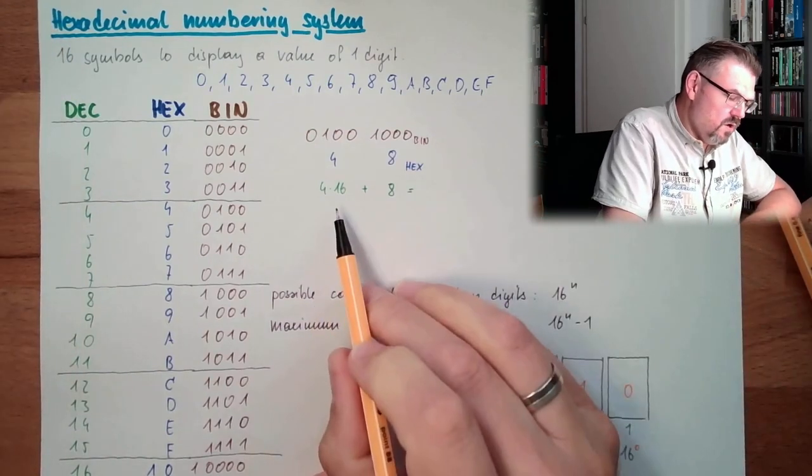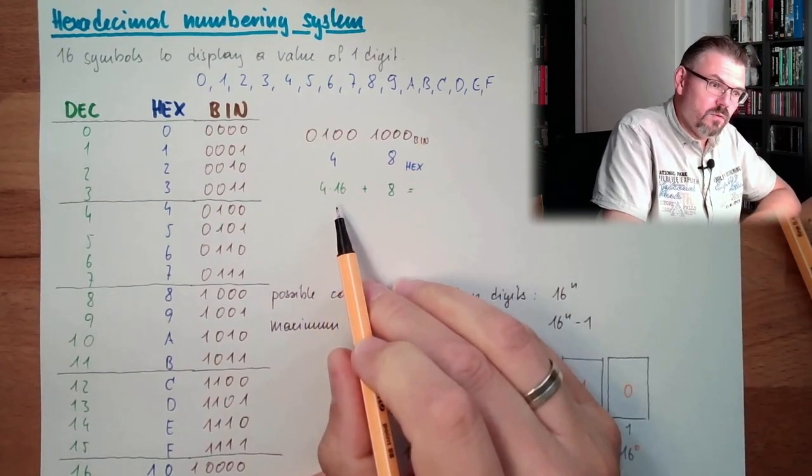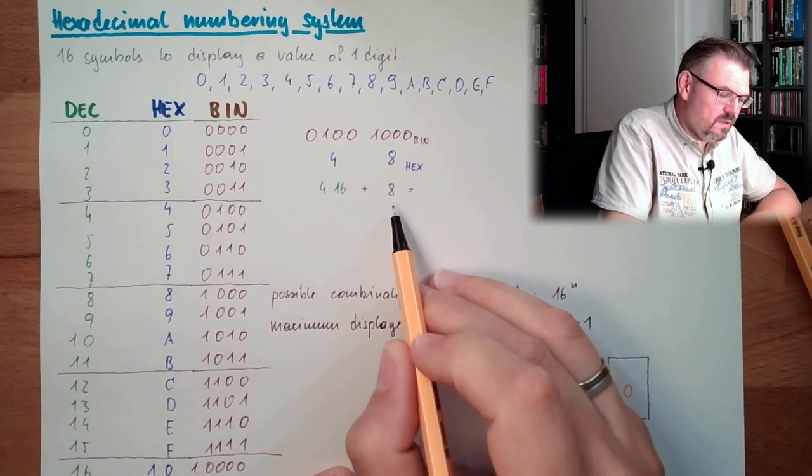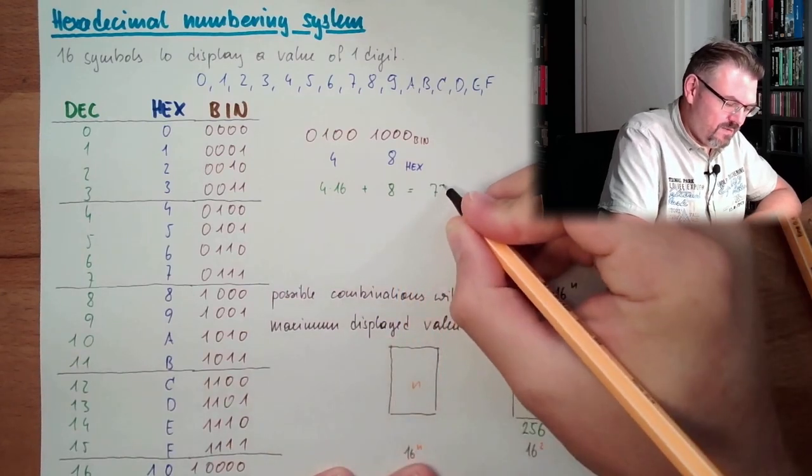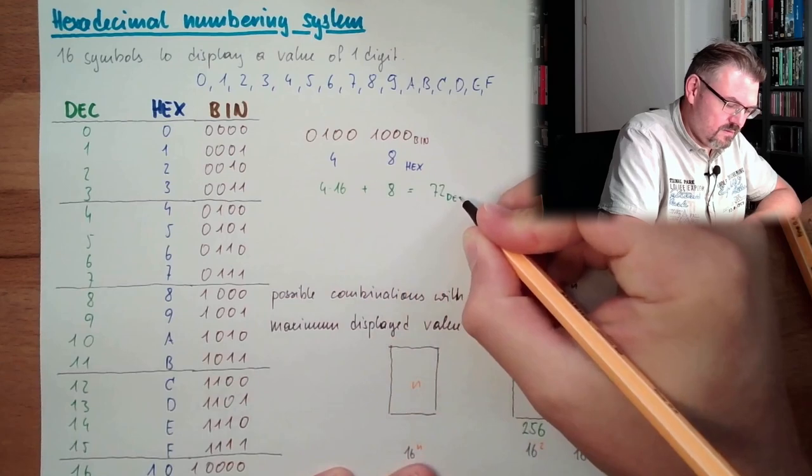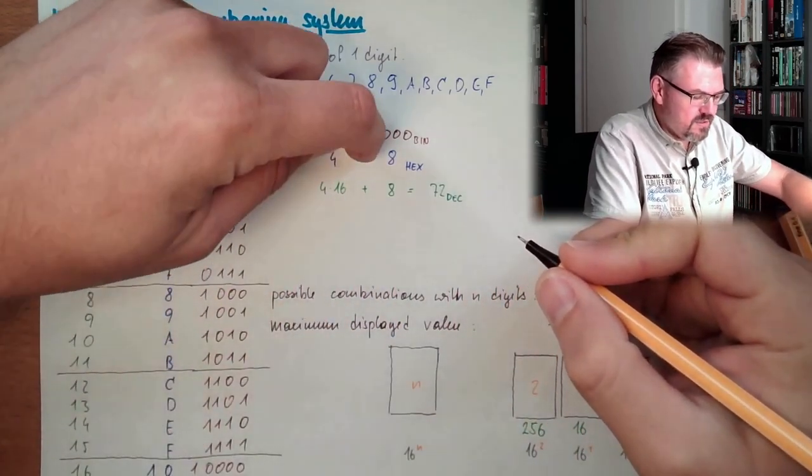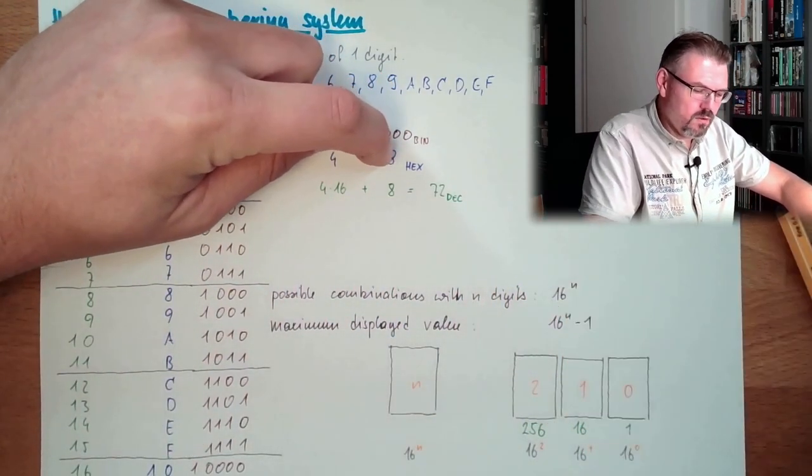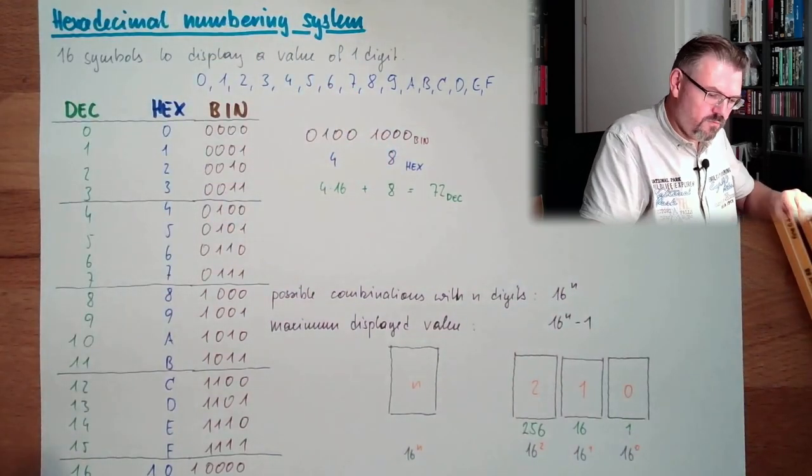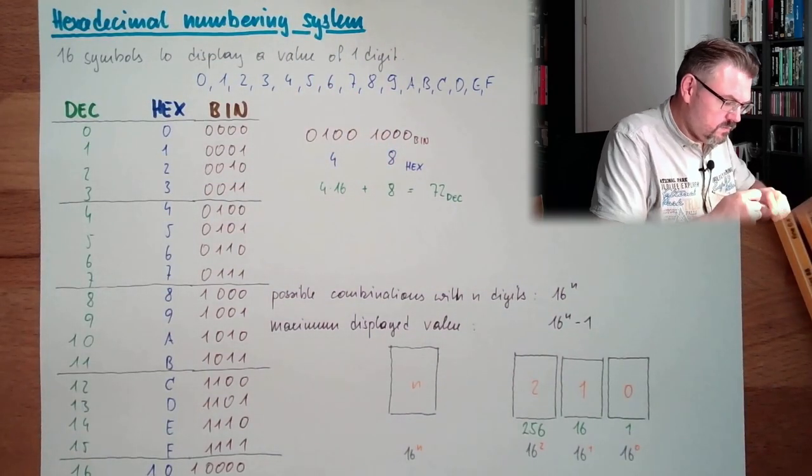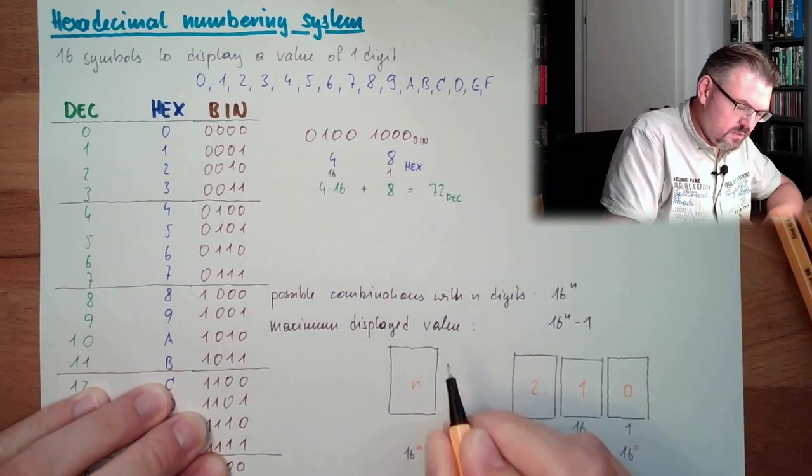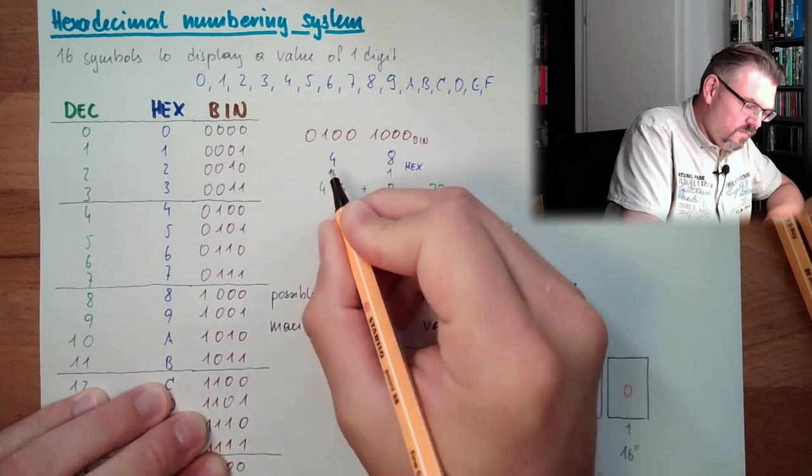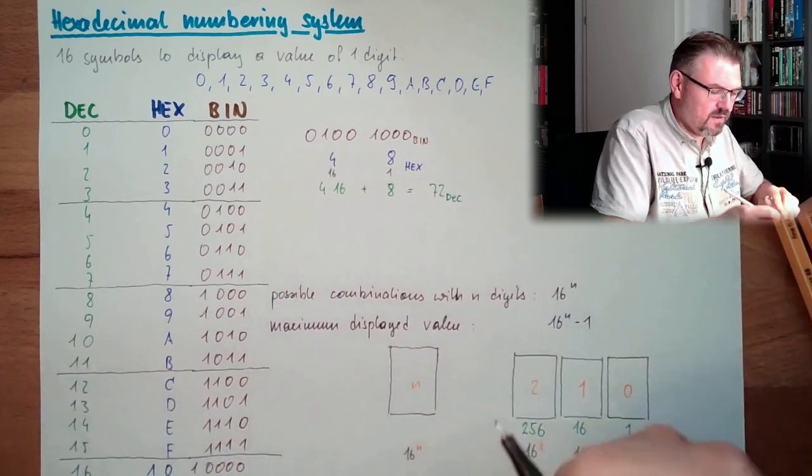So this is 4 times 16 is 64, plus 8, is 72 decimal. This is different, right? Because this is the first digit, value 1, and this is value 16. 8 times 1, 4 times 16, and adding decimal.